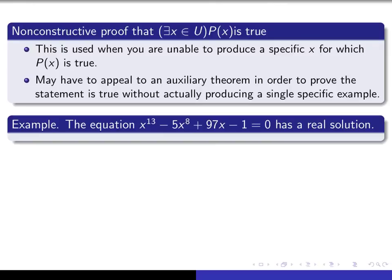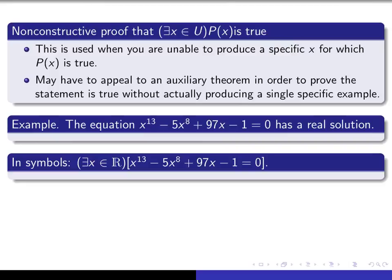Here's an example of such a thing. The equation x to the 13 minus 5x to the 8 plus 97x minus 1 equals 0 has a real solution. So if we write that in symbols, that says there exists a real number x such that that adds up to 0.